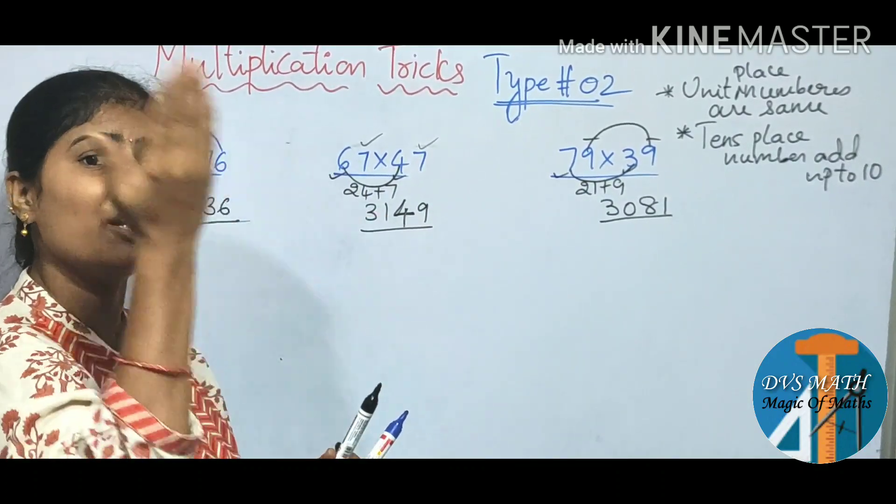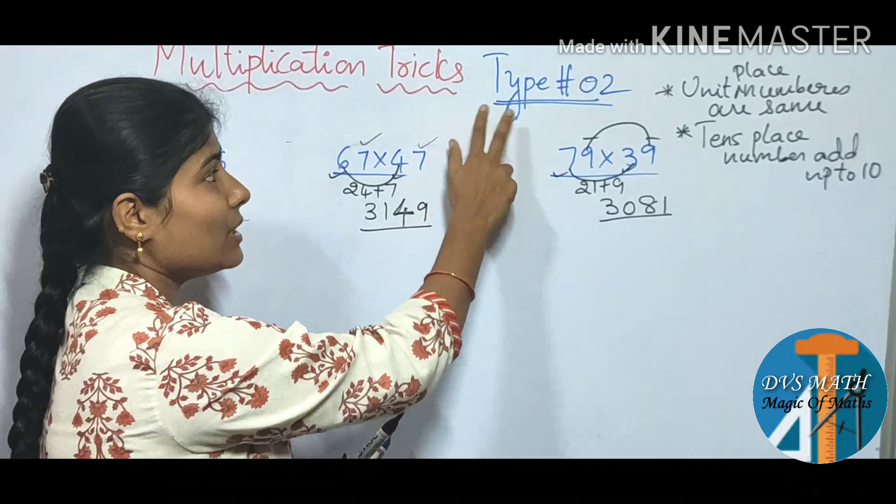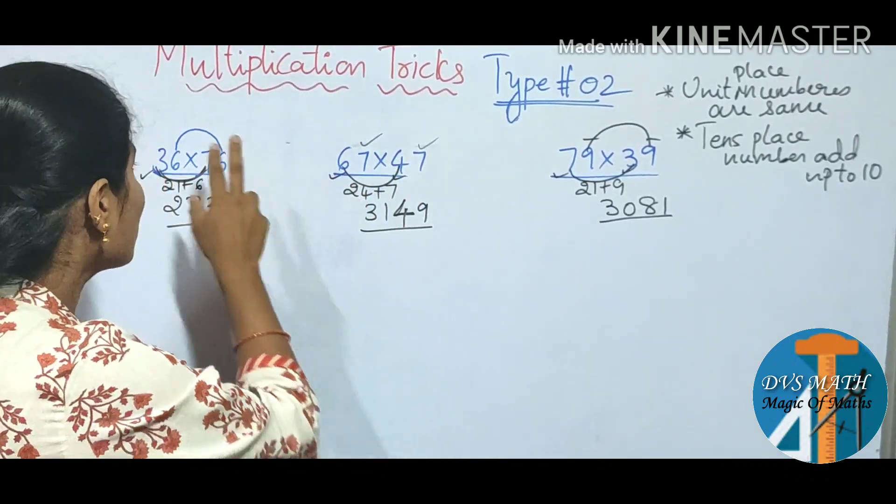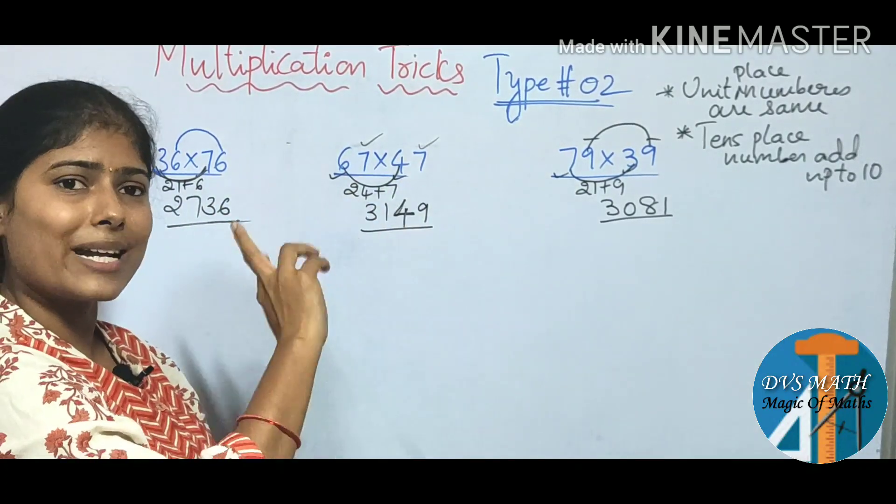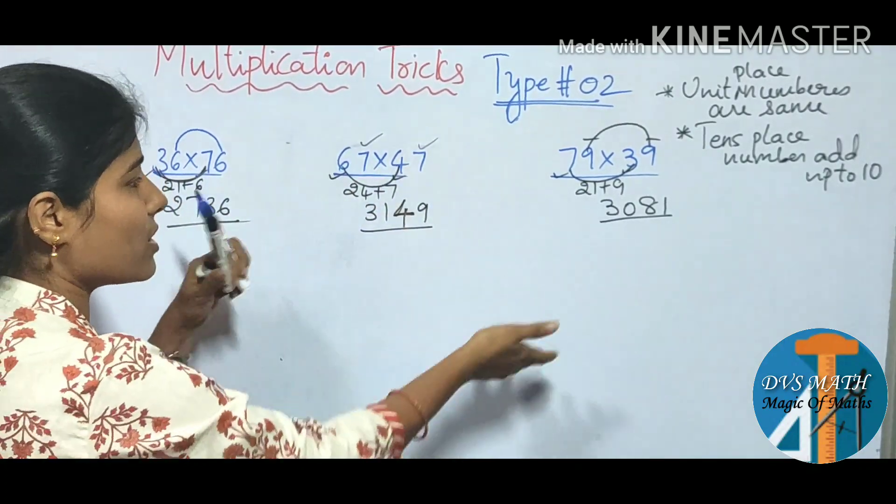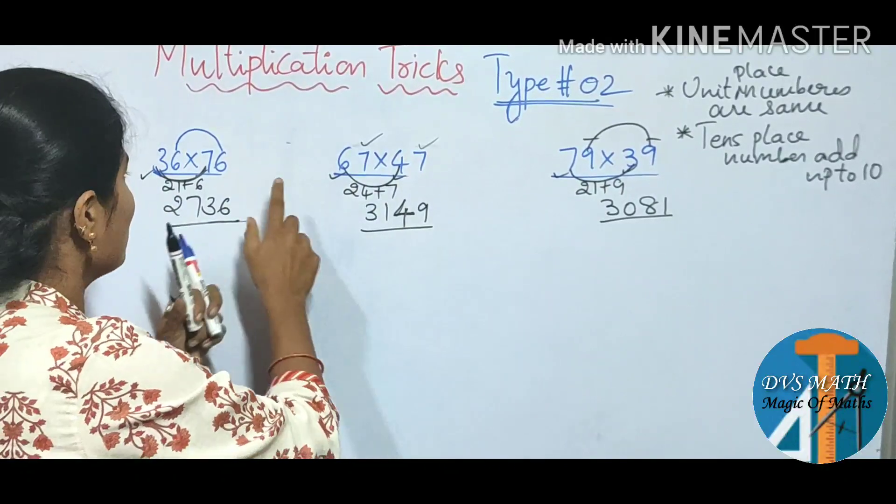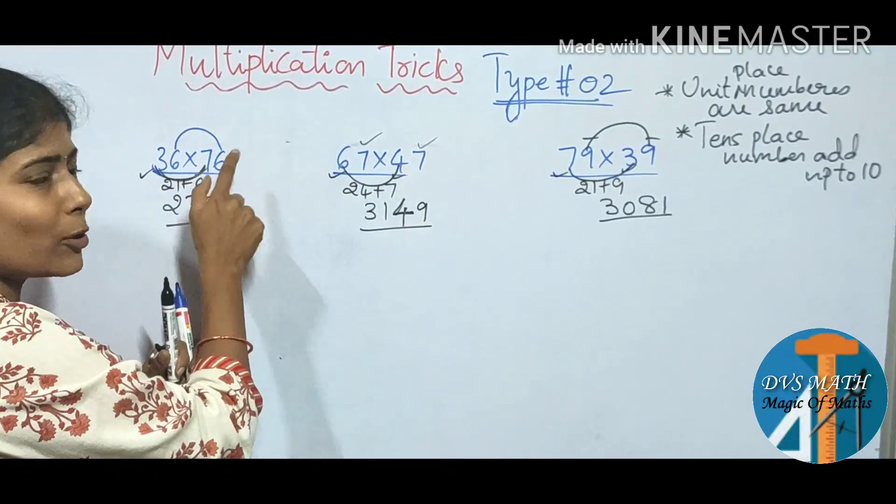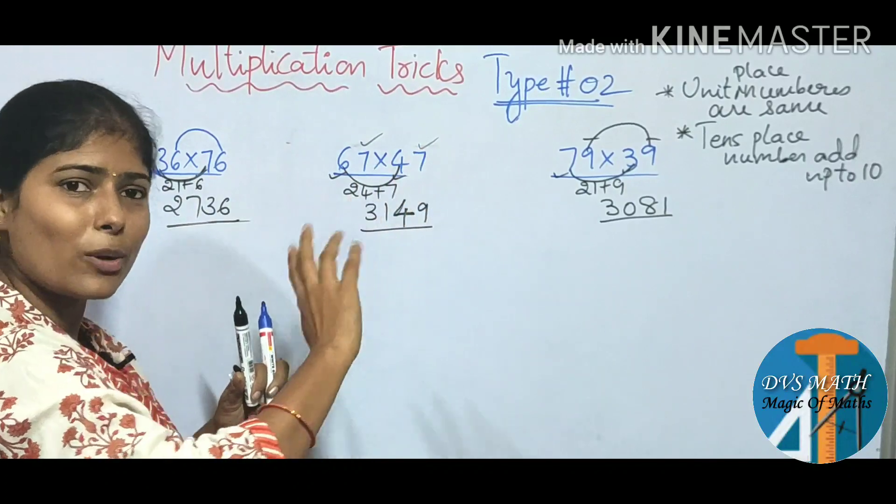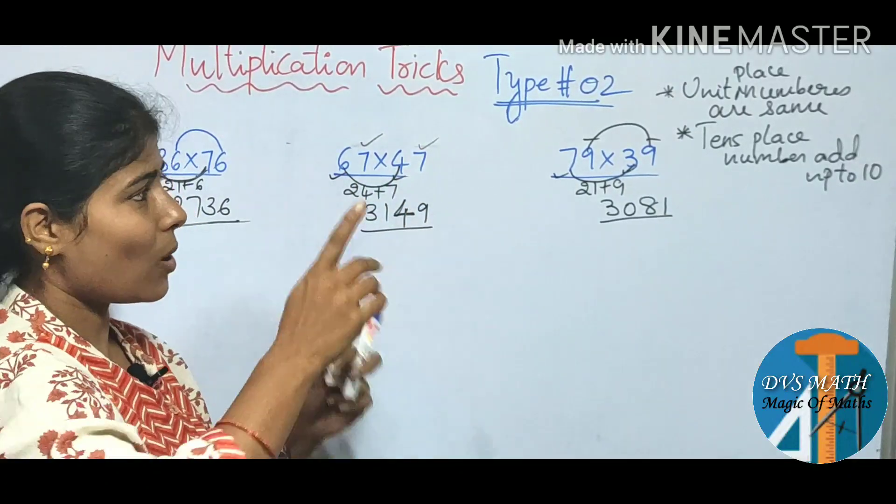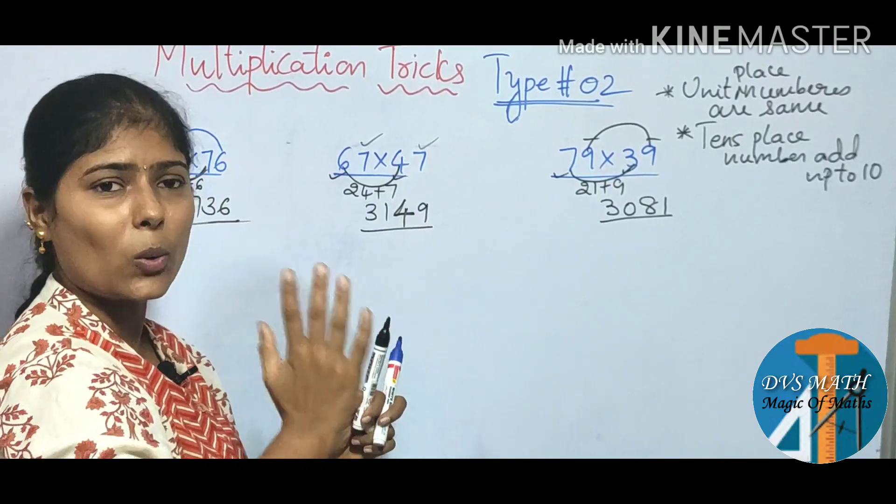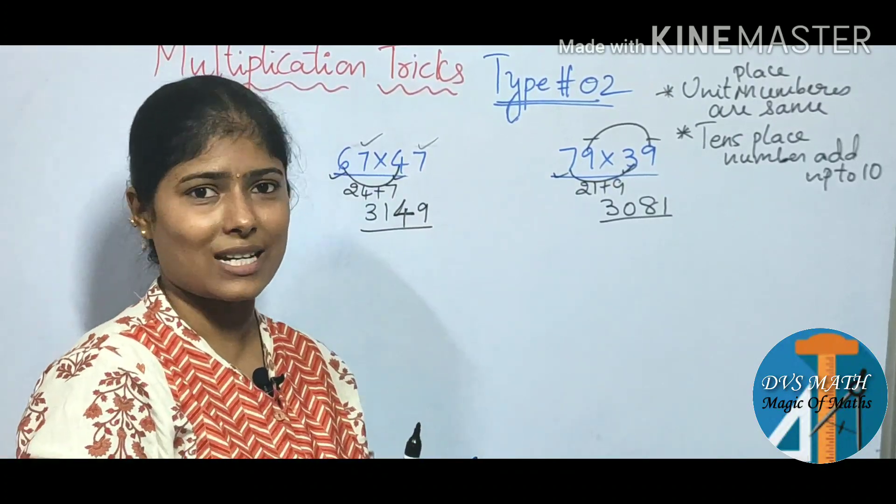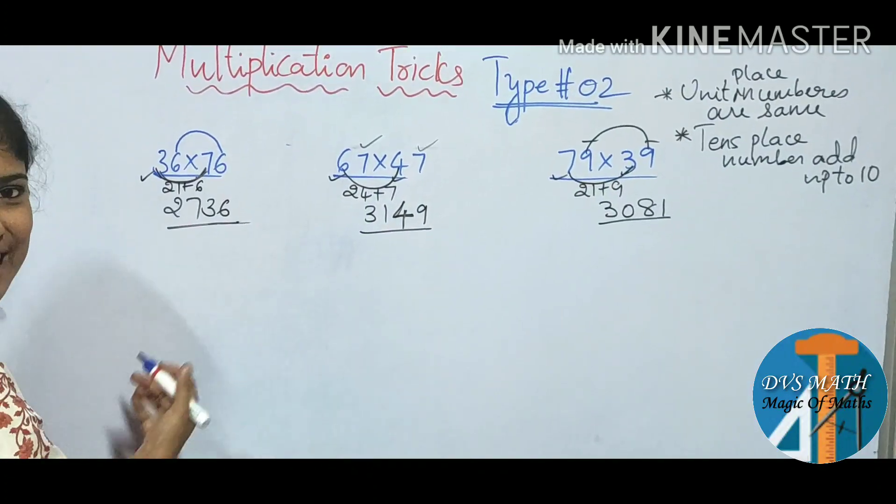How about our previous session, type 1 session? We can add 10 times in unit places. This rule apply again. This is reverse. This rule apply again.